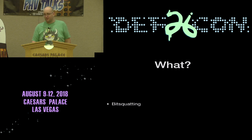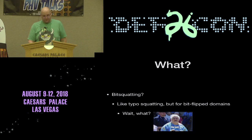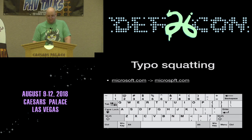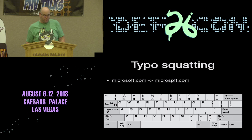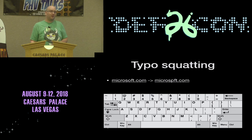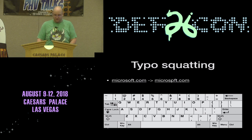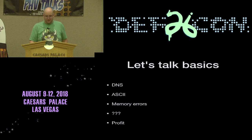So of course, what is bit squatting? Well, it's like typo squatting, but for bit flip domains. Typo squatting is when you make a typographical error in your domain name. In this case, you might type Microsoft as 'microspiffed,' because the P is right there next to the O. There's a bunch of other possible typos that could result from Microsoft.com, but I don't want to get into that too much.